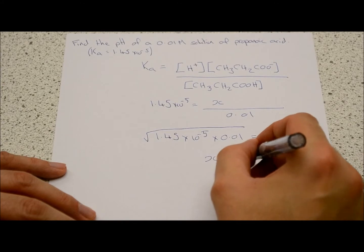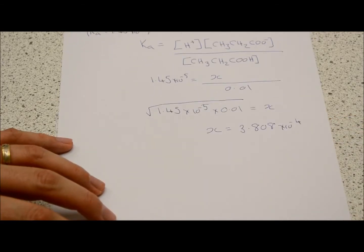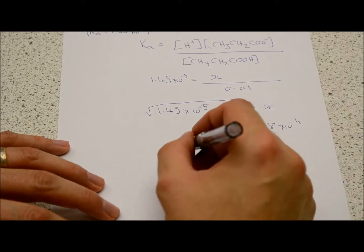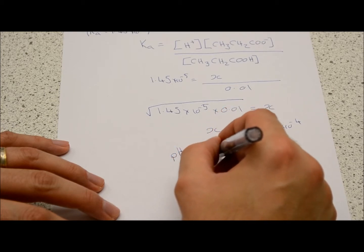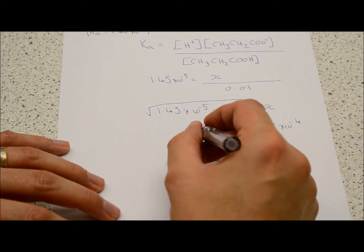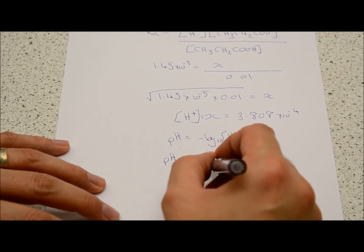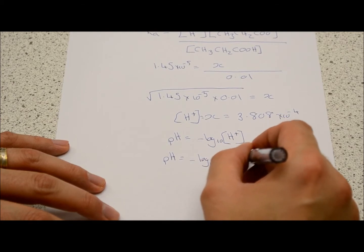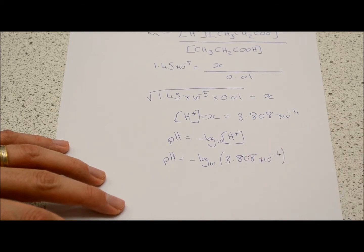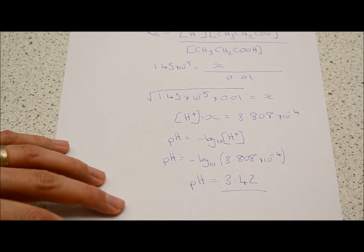x comes out as 3.808×10⁻⁴ mol/dm³. We plug that into the pH equation: pH equals minus log base 10 of 3.808×10⁻⁴. Leave that number in your calculator to carry fewer errors across. pH equals 3.42. It's an acid, so we'd expect less than 7, but not as low as 1 or 1.5 because it's a fairly weak acid.